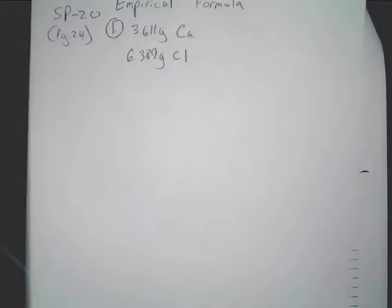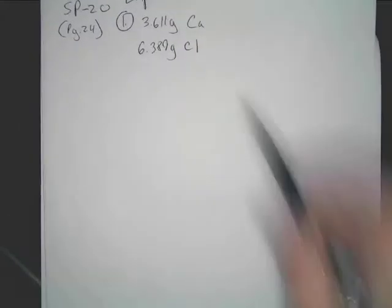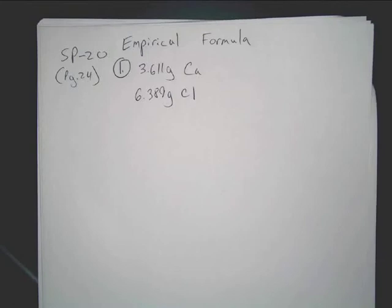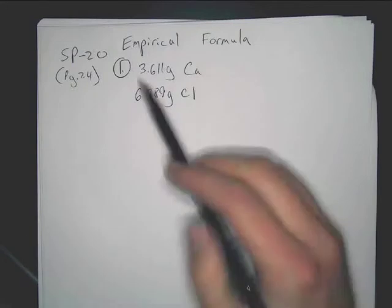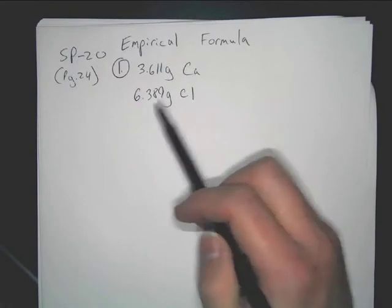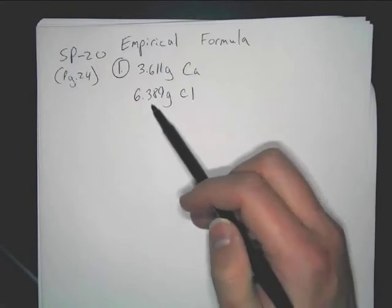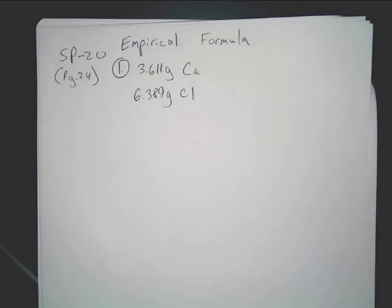The given masses are for each element in a sample of the compound. So here's what they did. This is basically saying that they took how many grams? What does that add up to right there? It's just 10. So it adds to 10. This is them basically saying, here's the deal. We had a 10 gram sample of this compound. We did some analysis and found that 3.6 grams of it were calcium, 6.3 or 6.4 grams were chlorine. We need to know what the formula is, what the ratio is here.